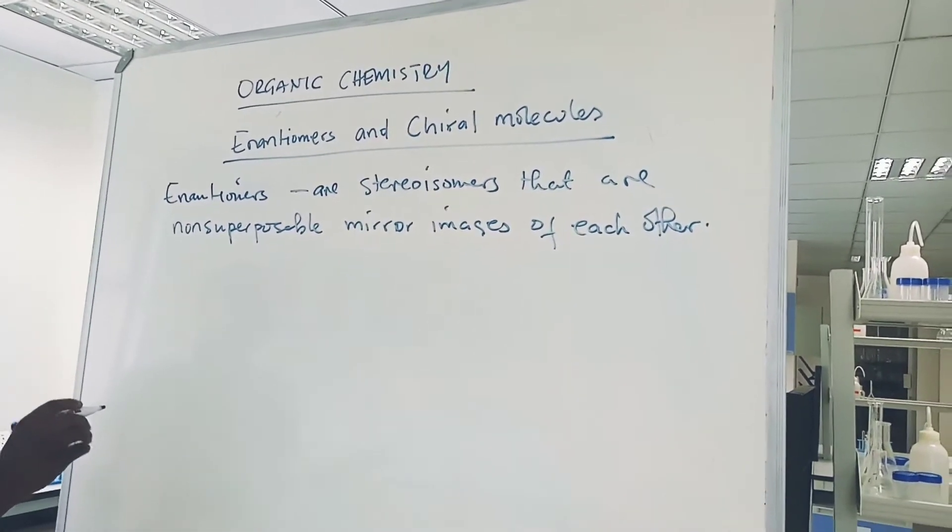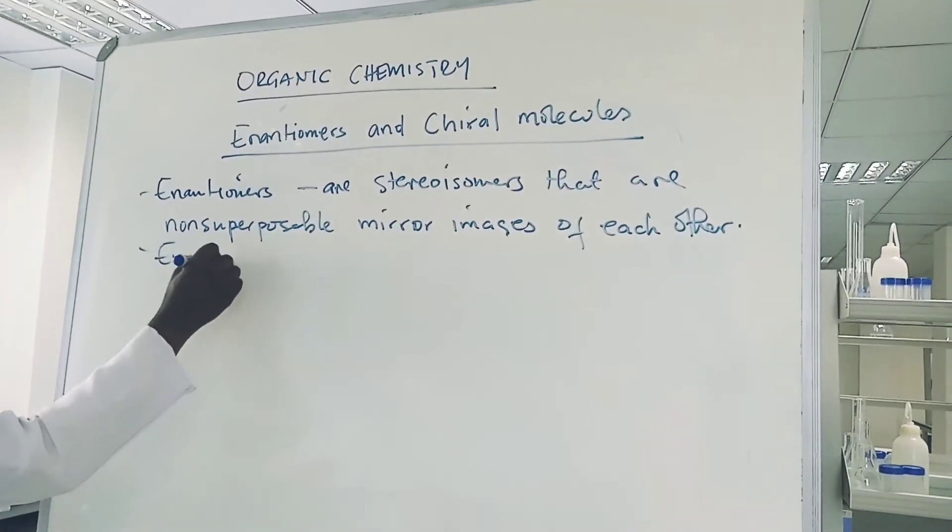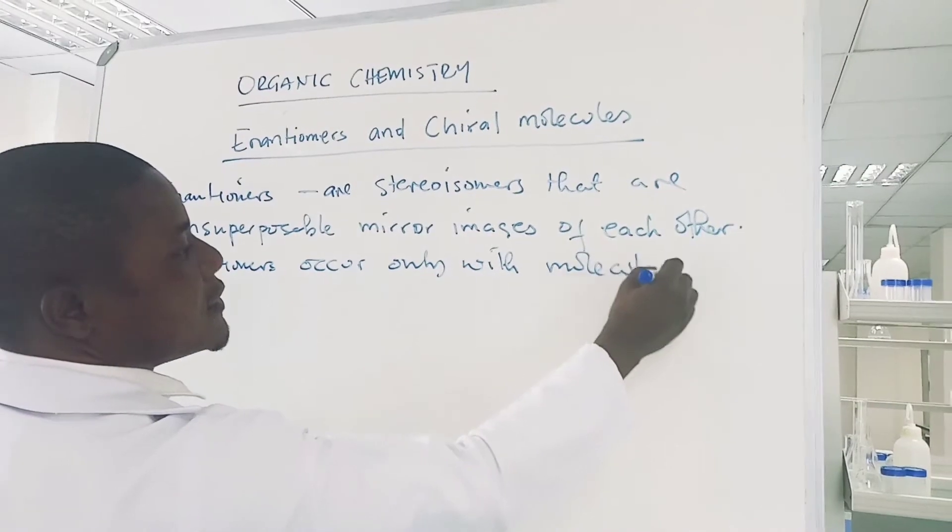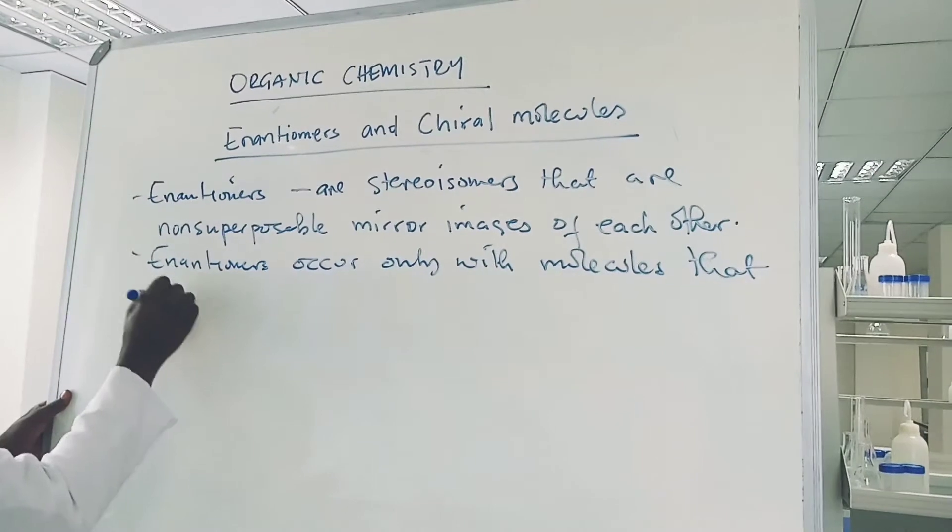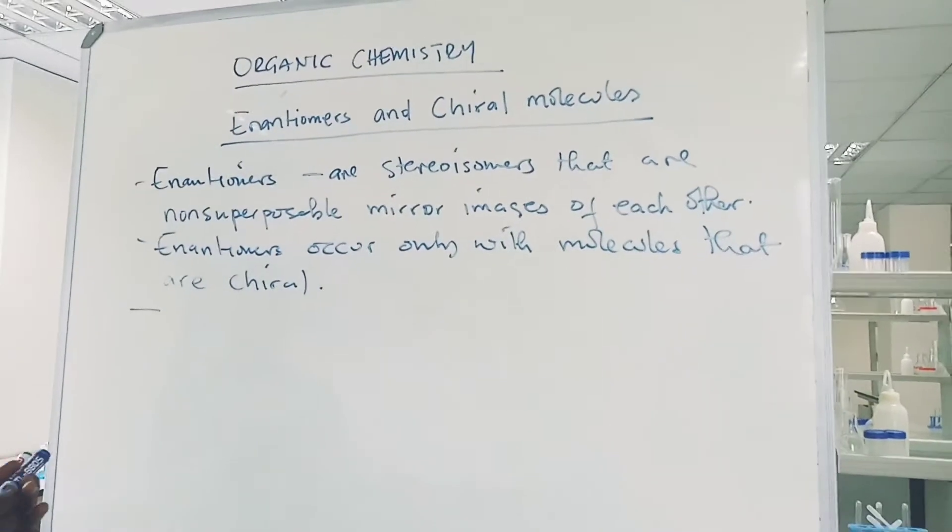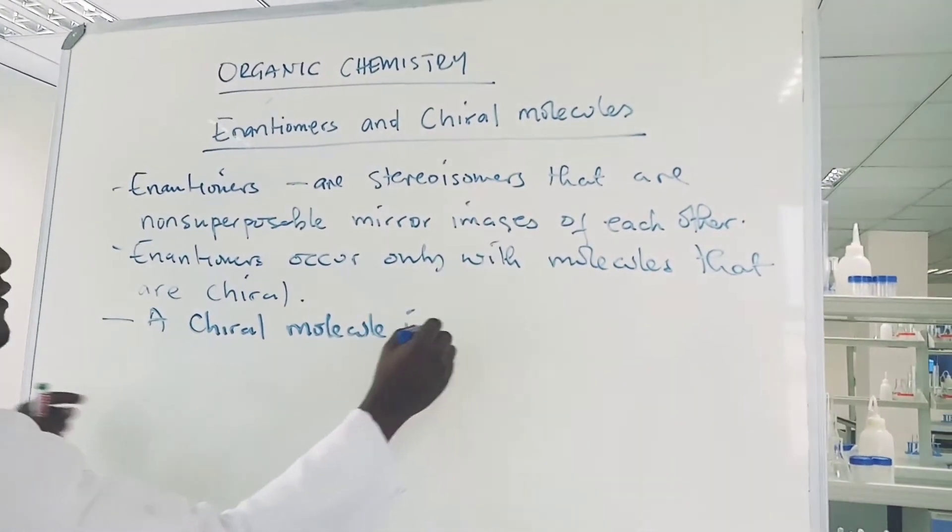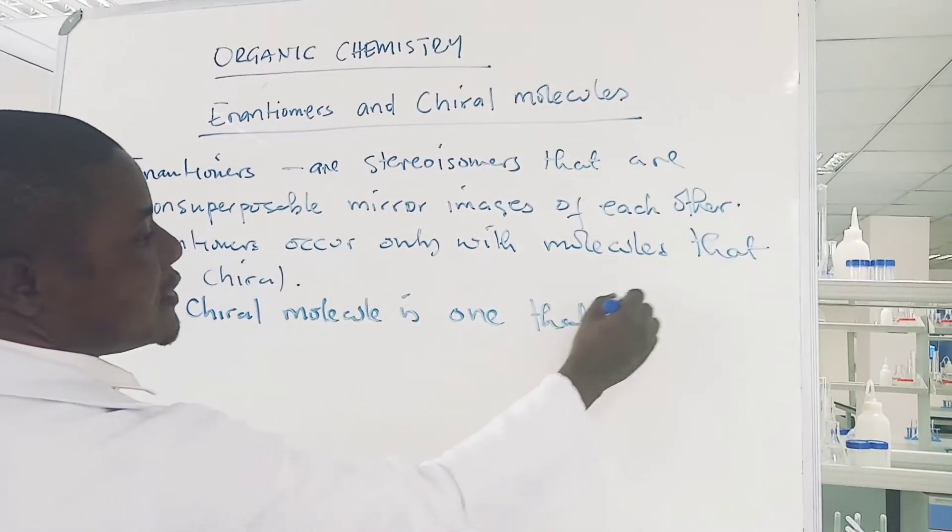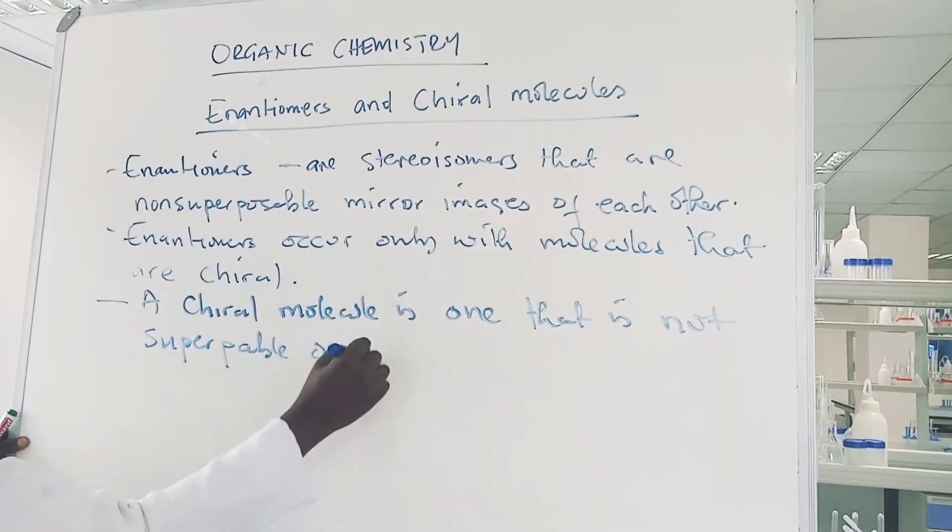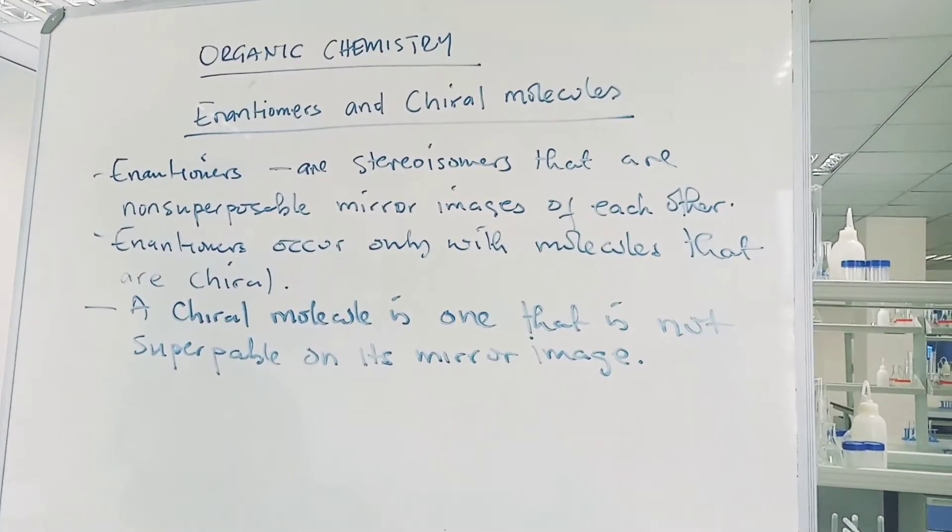Enantiomers occur only with molecules that are chiral. A chiral molecule is one that is not superposable on its mirror image. So this is how we can define a chiral molecule.